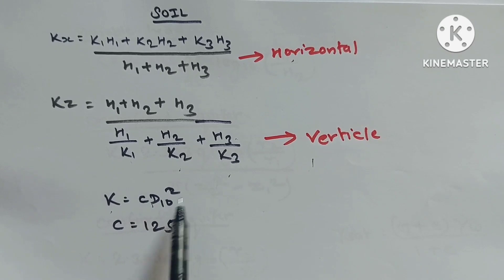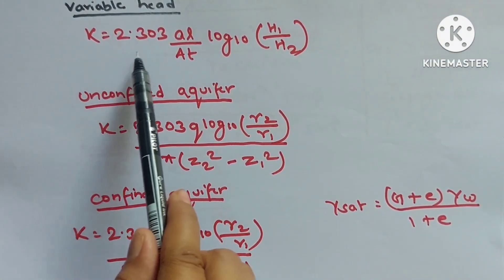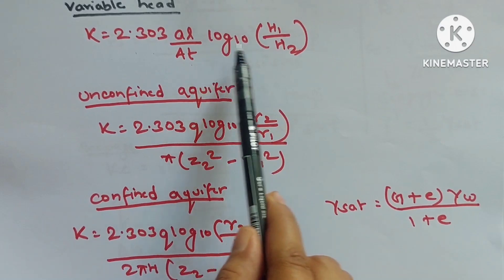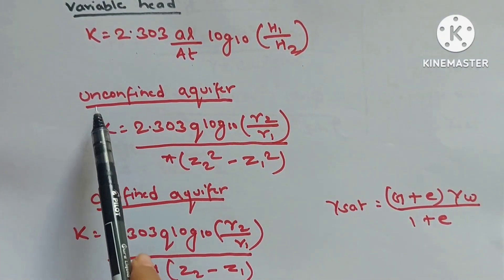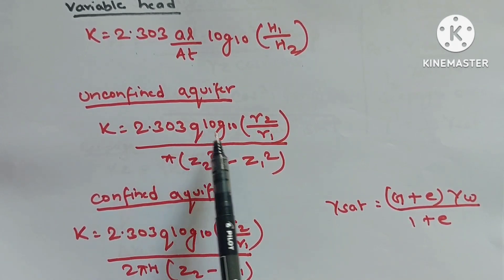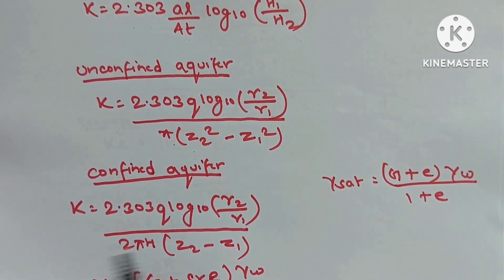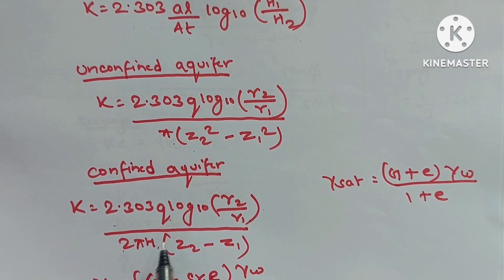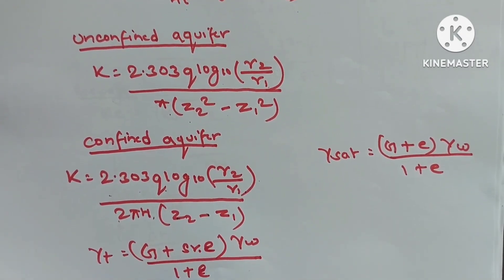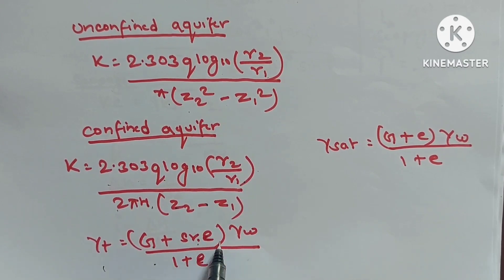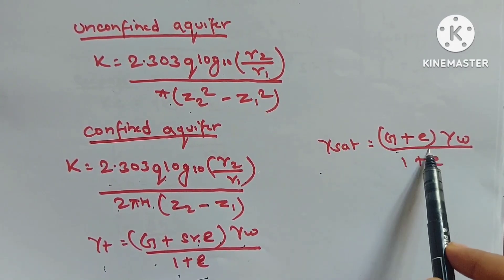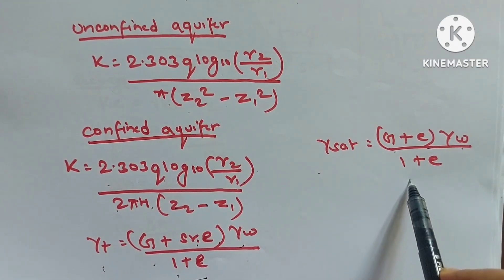Variable head permeability test: K = 2.303aL/(AT)·log₁₀(h₁/h₂). Unconfined aquifer: K = 2.303Q·log₁₀(R₂/R₁)/(π(Z₂² − Z₁²)). Bulk unit weight γt = (G + SR·e)/(1 + e) × γw. Saturated unit weight γsat = (G + e)/(1 + e) × γw.